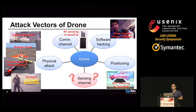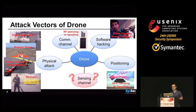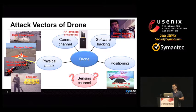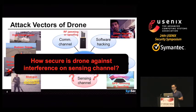How about sensors? Sensors are very important for drone's operation. However, the sensing channel of a drone has not been investigated yet as an attack vector. So we asked this question: how secure is a drone against intentional interference on this sensing channel?